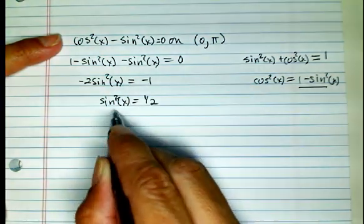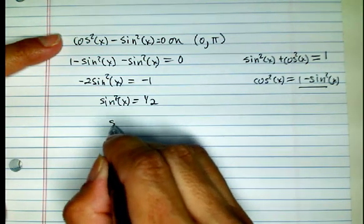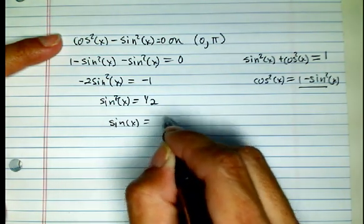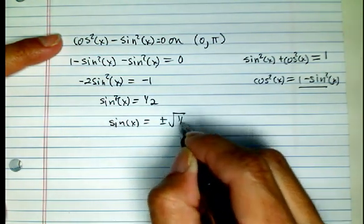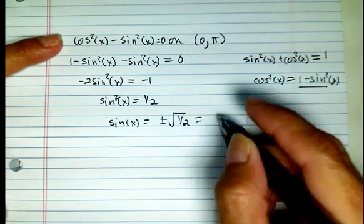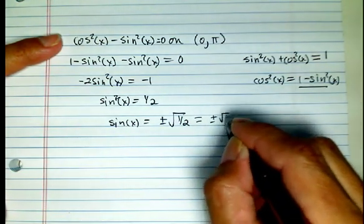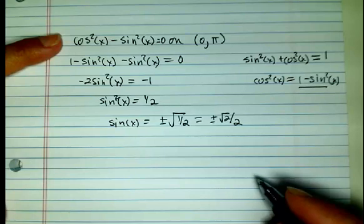Now we can solve for sine of x. So sine of x is going to be equal to plus or minus the square root of 1 half, which is the same thing as plus or minus the square root of 2 over 2.